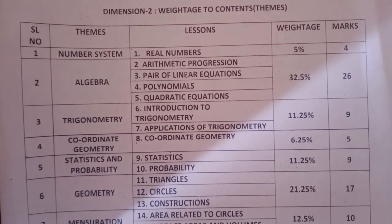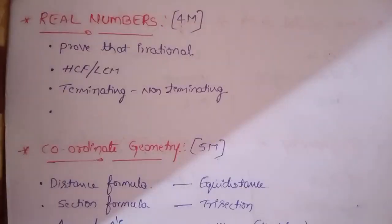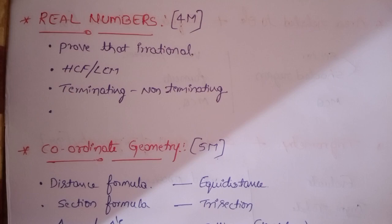Now in each lesson, which concepts to choose - note this down. In real numbers, what concepts to learn? First is to prove that a number is irrational: square root 2, square root 3, 3 plus 2 root 3, like that. This carries two marks. HCF LCM one mark, and terminating non-terminating one mark. These three concepts cover four marks.